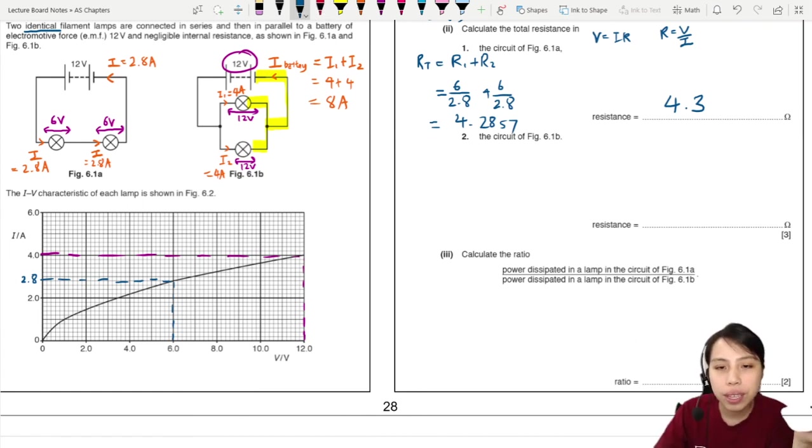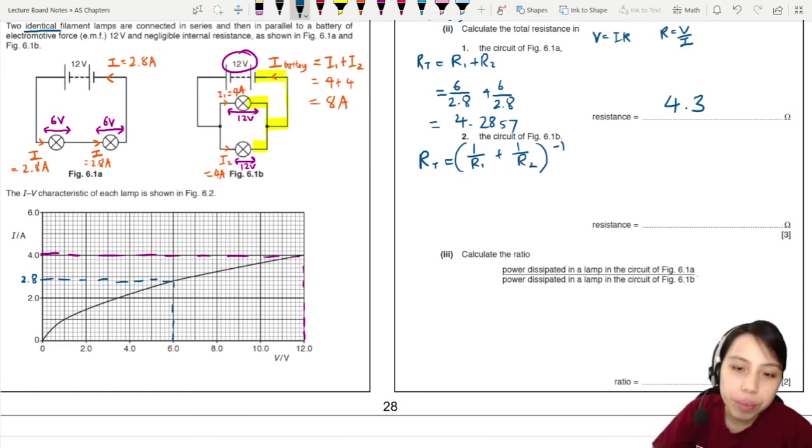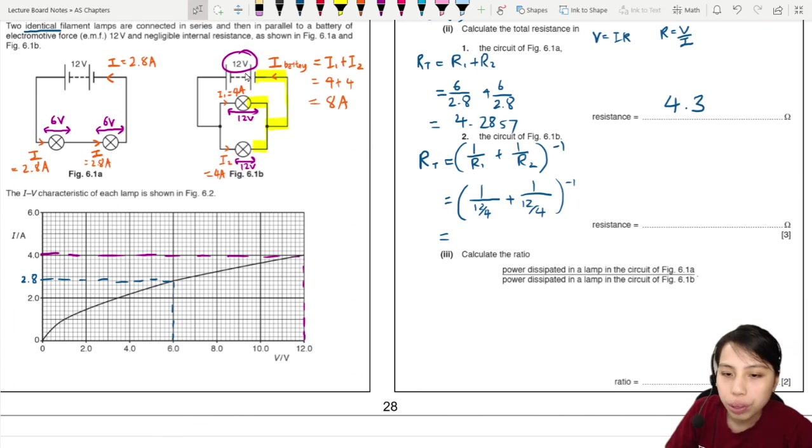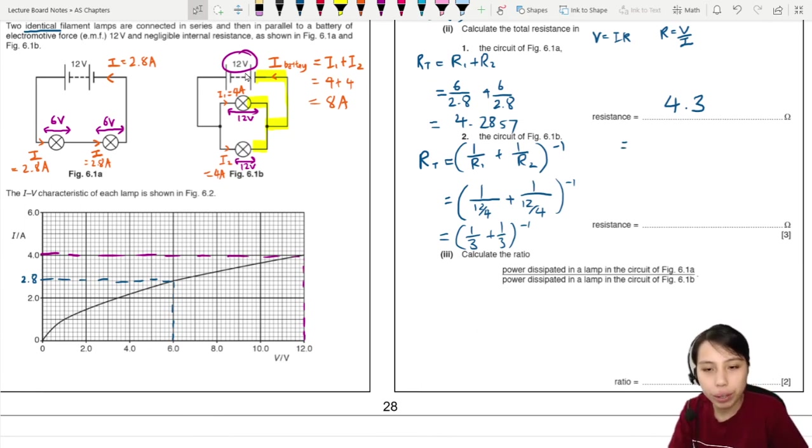In parallel now, the equation is one over R1 plus one over R2 and one over the whole thing, which I'm lazy to write. So I just put negative one to inverse the whole thing. So this will be one over what's the resistance of this lamp? R is V over I. So V is 12, I is 4. 12 over 4 plus one over same 12 over 4. This will be one over three plus one over three. You can press the calculator or you just do manual calculations. This should give you three over two, which means do not write fractions. This one should be 1.5.